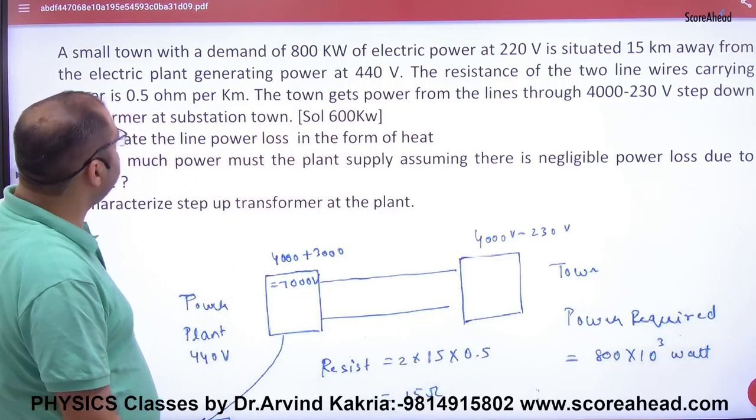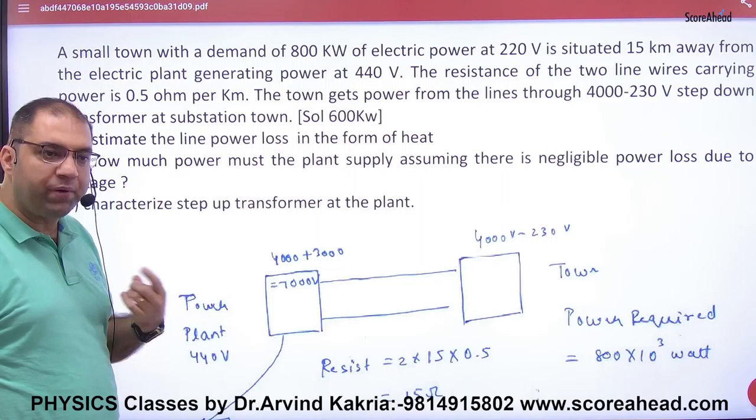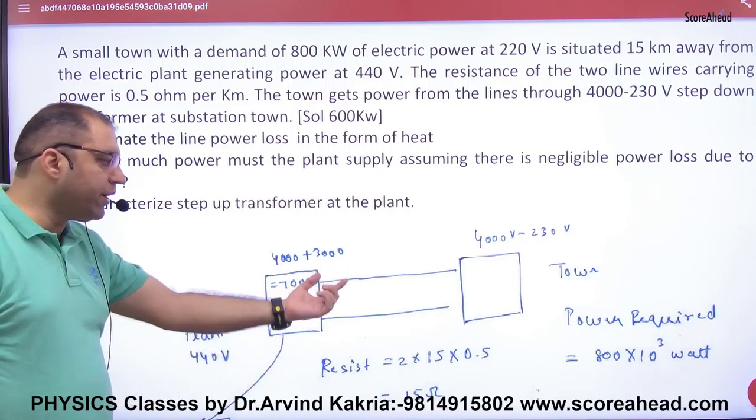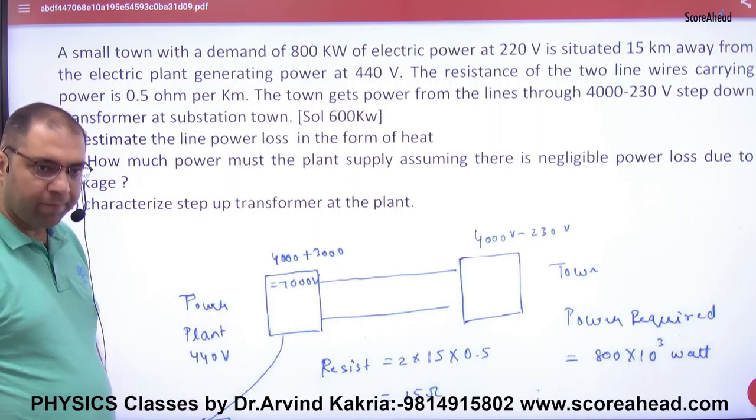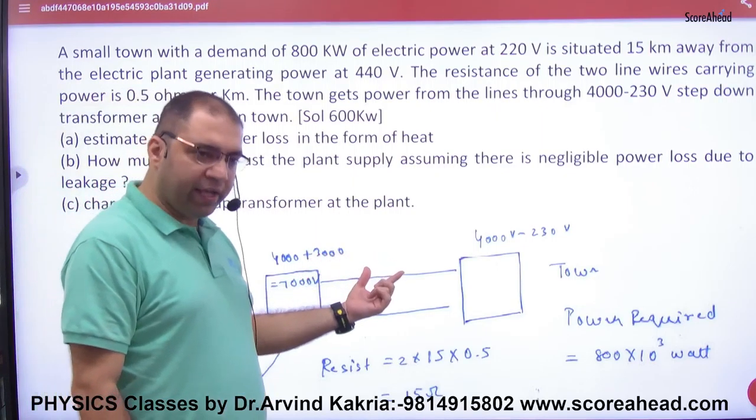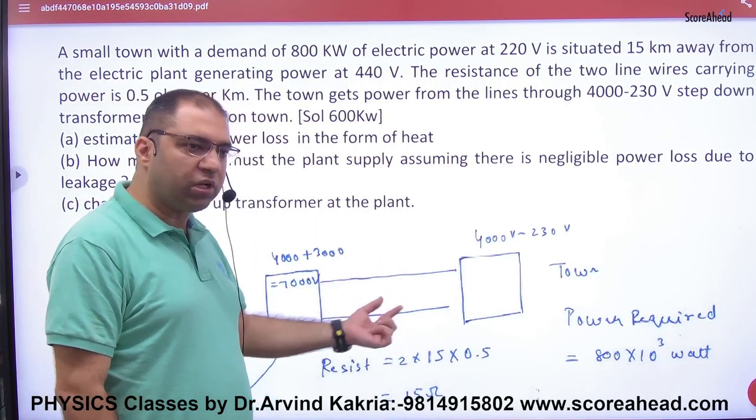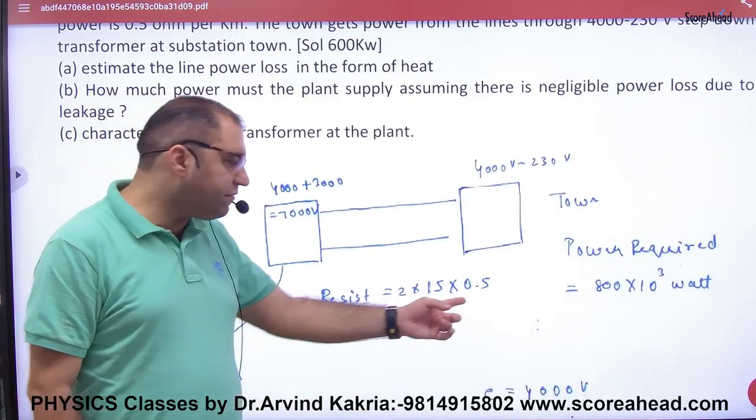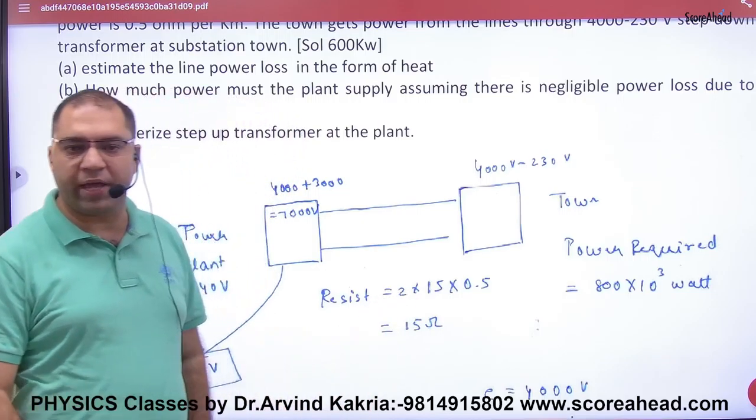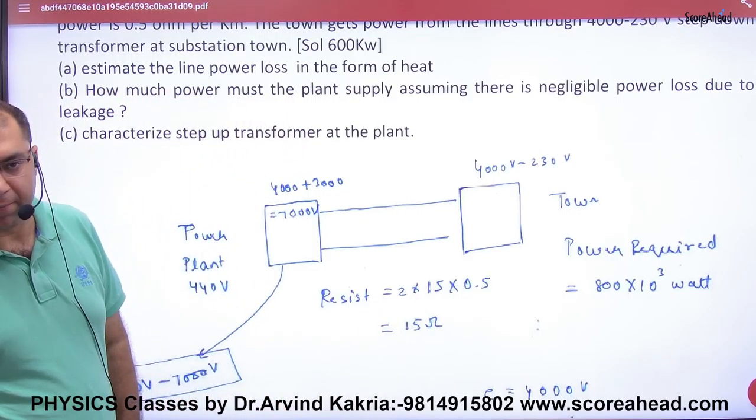Resistance of two line wire carrying power is 0.5 ohm per km, so 1 km resistance is 0.5 ohm. So 15 km wire each, total length is 30 km. 0.5 we multiply, total resistance is 15 ohm.